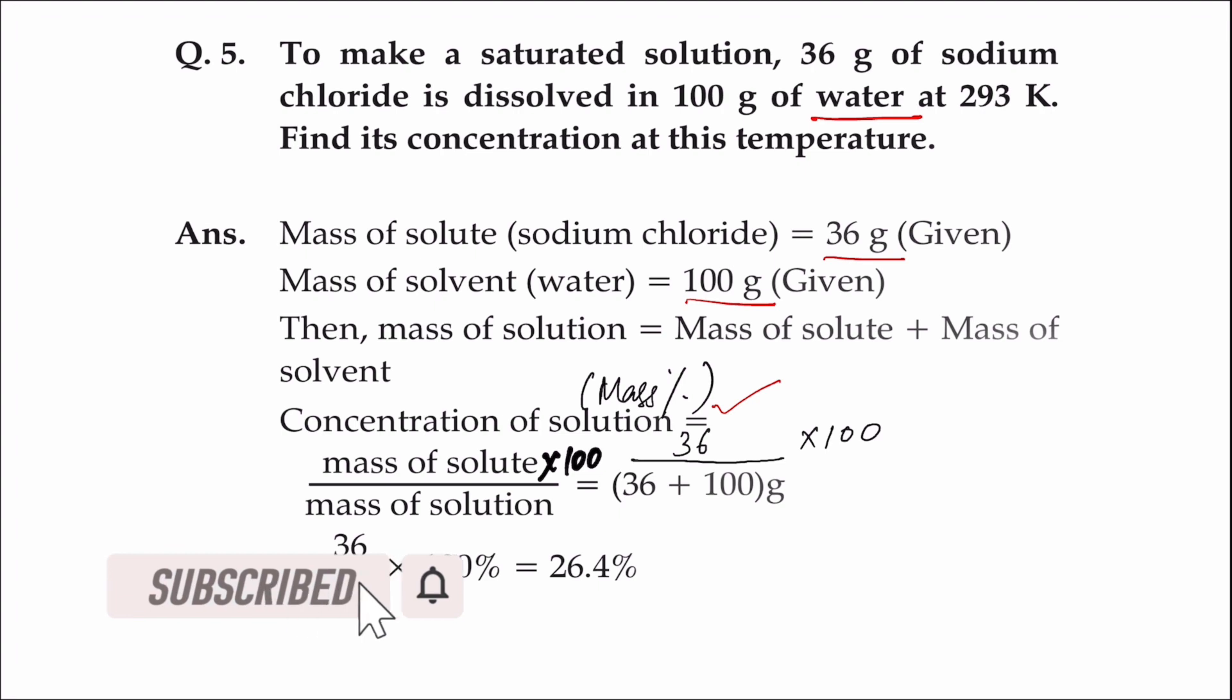Mass of solvent is 100 grams. Mass of solution will be mass of solute plus mass of solvent, which is 36 plus 100.